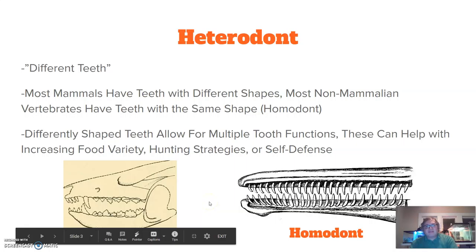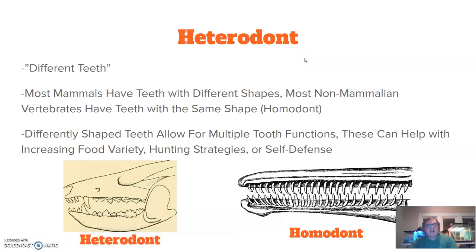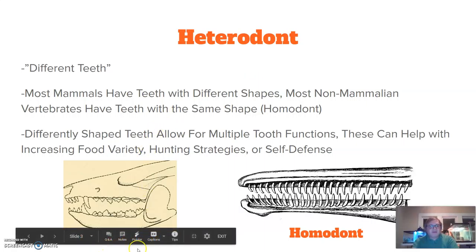One of the first things we look at is that mammals, by and large, are heterodont. Heterodont means different teeth — hetero meaning different, dont meaning tooth. Most mammals have teeth with different shapes, while most non-mammalian vertebrates have teeth with the same shape, which is homodont. Looking at the example on the left is a good example of mammalian teeth, while homodont, shown on the right, represents a reptilian animal with very similar teeth all through the jaw.